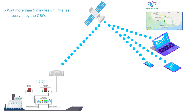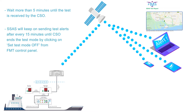Wait more than 5 minutes until the test is received by the CSO. SSAS will keep on sending test alerts after every 15 minutes until CSO ends the test mode by clicking on Set Test Mode Off from FMT Control Panel.